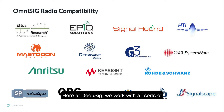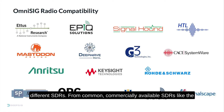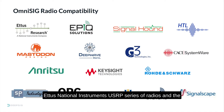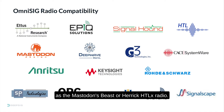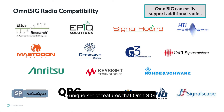Here at DeepSig, we work with all sorts of different SDRs, from common commercially available SDRs like the EDIS National Instruments USRP series of radios and the Epic Solutions Sidekick series, to radios that have extreme bandwidths like the SignalHound SM435B, and even ruggedized radios for more industrial or defense use, such as the Mastodon's Beast or Herrick HTLX radio. Each of these radios provides a unique set of features that OmniSig can leverage to get unprecedented performance.